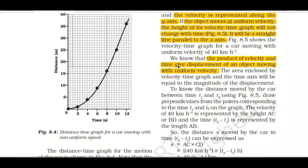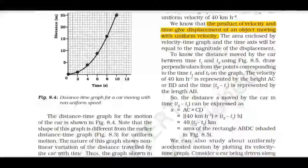The product of velocity and time gives displacement. When you multiply velocity by time, it gives the displacement of an object moving with uniform velocity.